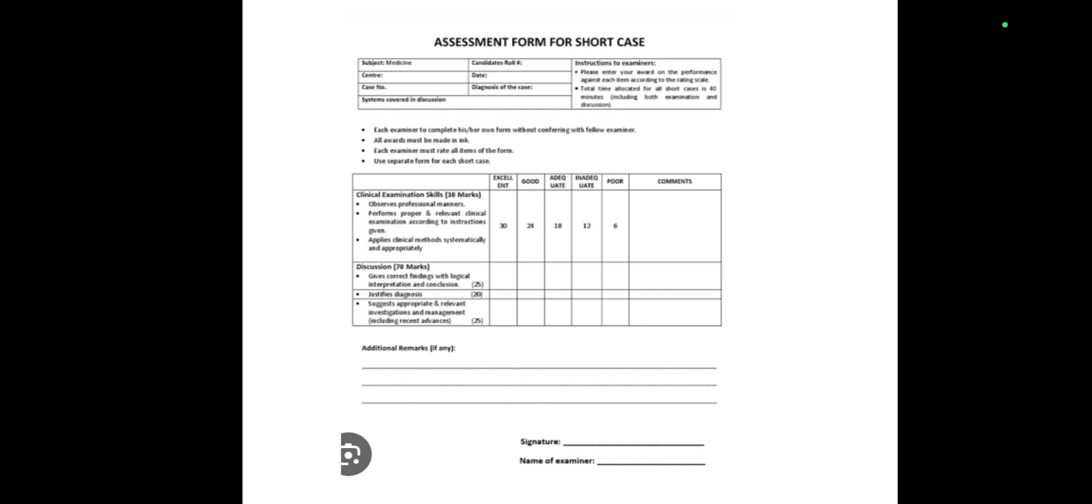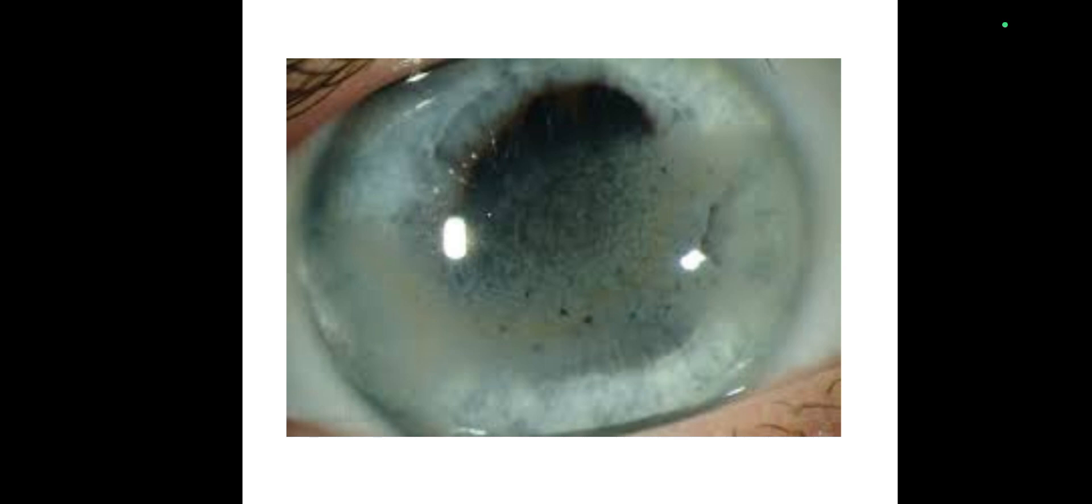In discussion, when you are doing viva with the examiner, give the correct findings with logical interpretation, justify the diagnosis. Every one of these things has points or marks. You have to suggest appropriate and relevant investigation and management plan, including recent advances. At the end, the examiner should sign and stamp this sheet. It is not a secret. If you achieve these expertise during exam and meet the expectation of the examiner, you can pass the exam. This is one of the short cases I will show you. The command from the examiner will be, in this case, do the anterior segment examination.